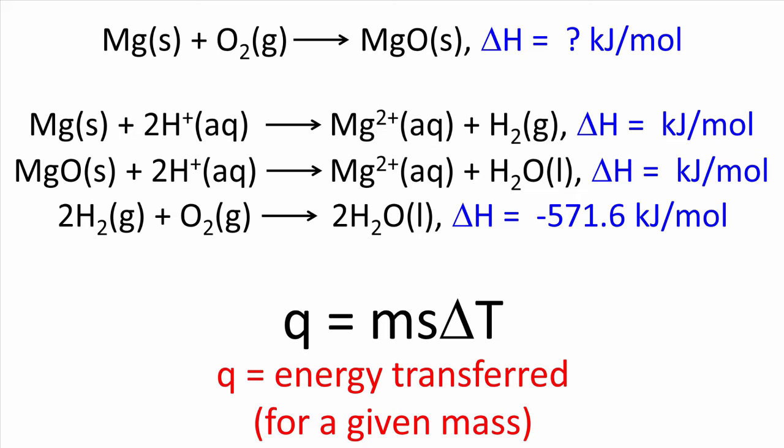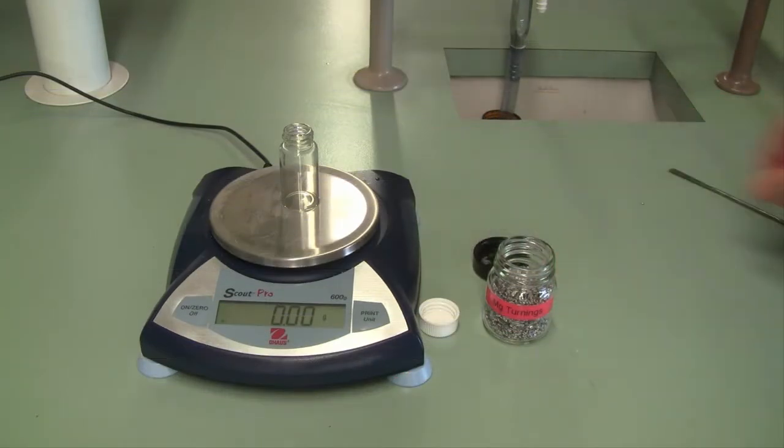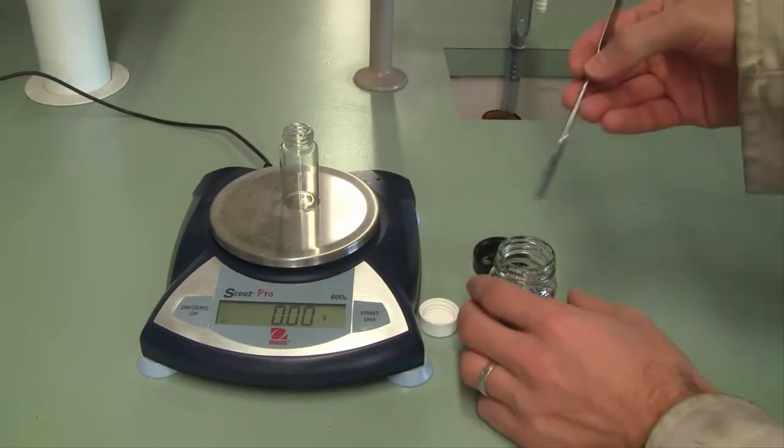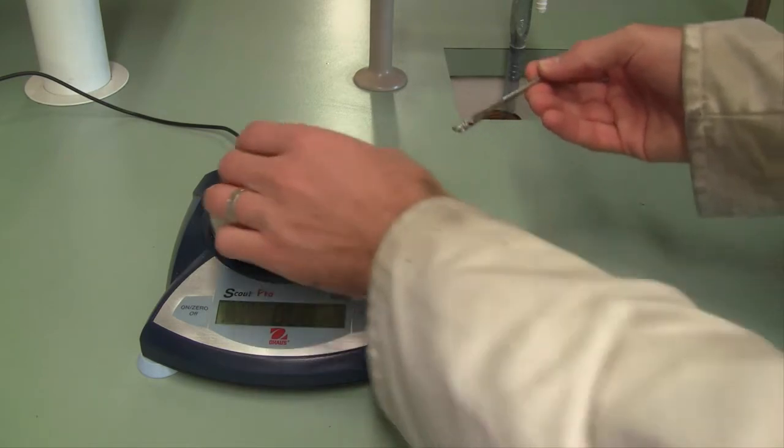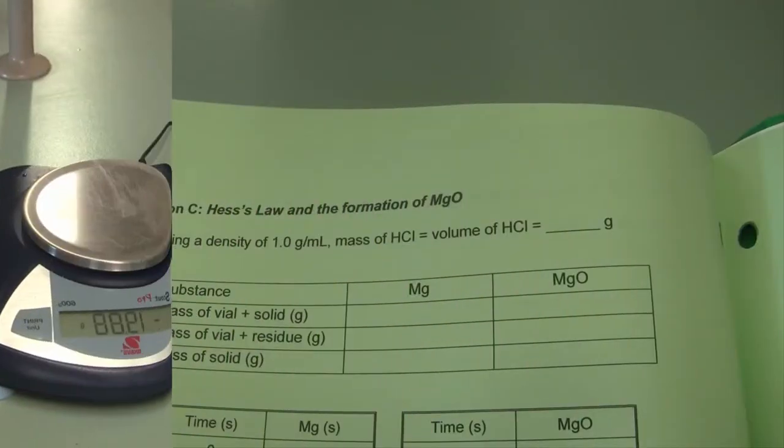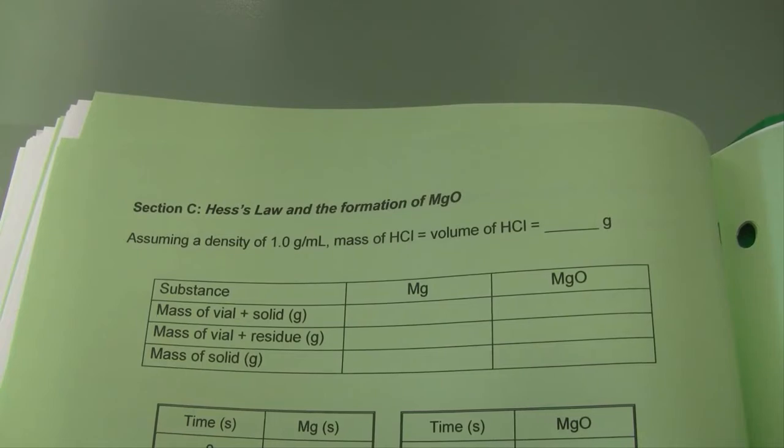We're going to measure the enthalpy of some more simple chemical reactions in the lab, and then we're going to use a combination of these three reactions and their enthalpies to determine the enthalpy of the overall reaction at the top of this page. To conduct the experiment, take approximately 0.25 grams of the solid magnesium metal. We're going to weigh the mass of magnesium metal by difference, so be sure to then measure it accurately on the analytical balance.